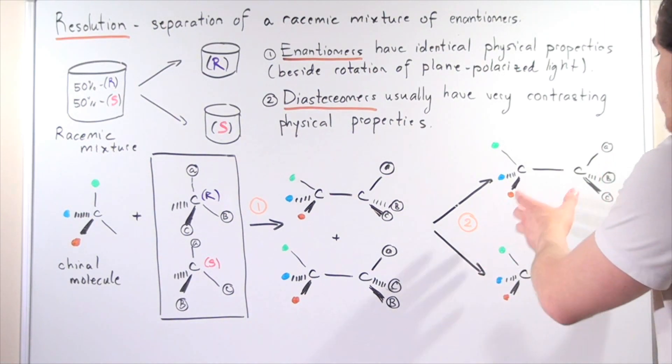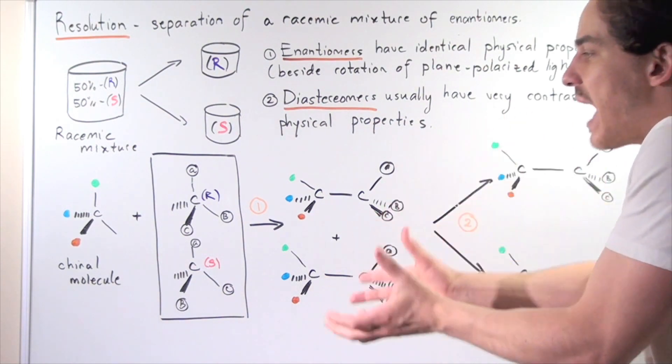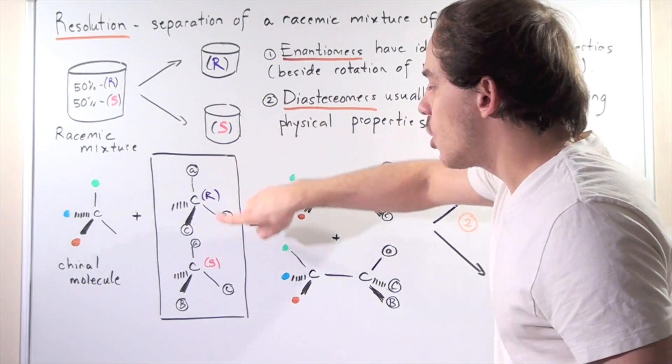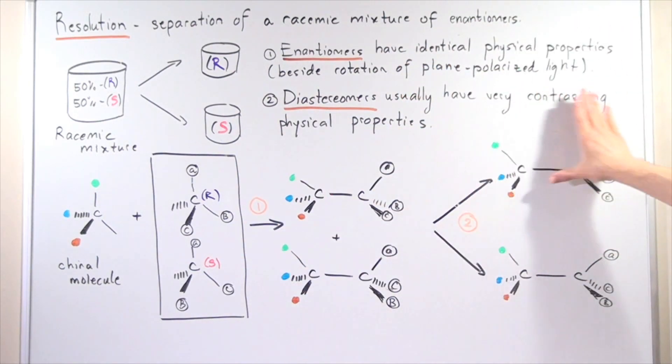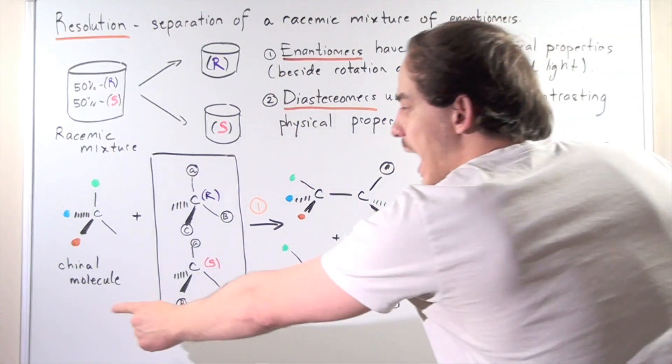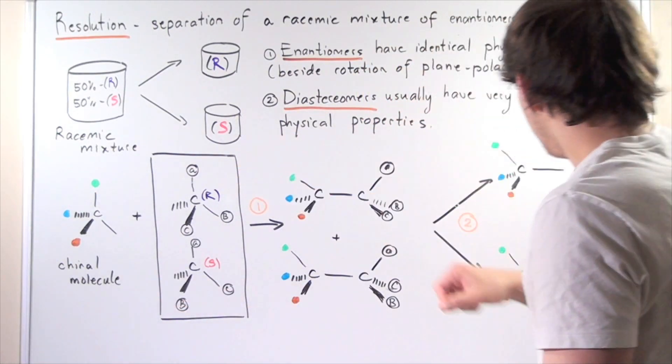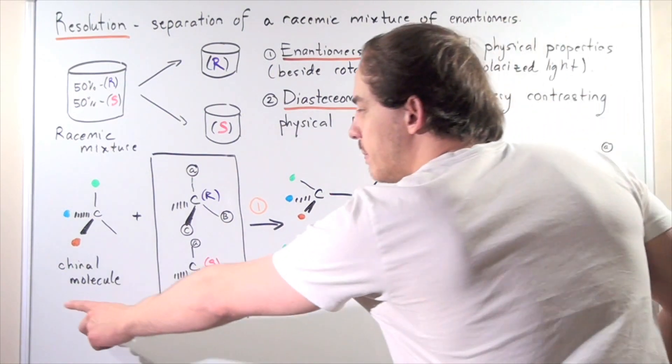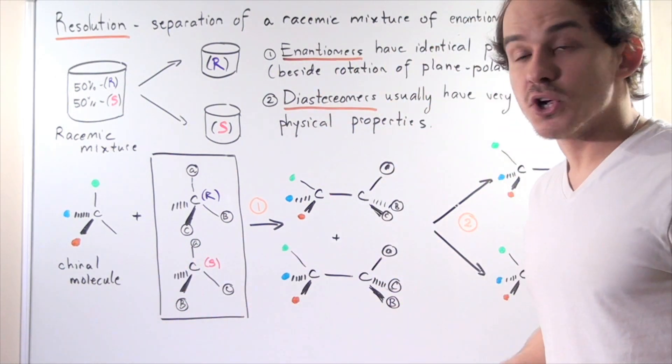Now we can react these two molecules in a way to get back our chiral molecule and one of the R or one of the S. For this compound, we can react it in a way for it to form back our chiral and the R. For this compound, we can react it in a way for it to form back our chiral and our S enantiomer.